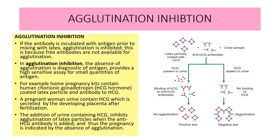In agglutination inhibition, the absence of agglutination is diagnostic of antigen presence, and it provides a high sensitivity assay for small quantities of antigen. For example, home pregnancy kits contain human chorionic gonadotropin (HCG) hormone coated on a latex particle and antibody to HCG. A pregnant woman's urine contains HCG, which is secreted by the developing placenta after fertilization. The addition of urine containing HCG inhibits agglutination of the latex particle when anti-HCG antibody is added, and thus pregnancy is indicated by the absence of agglutination.